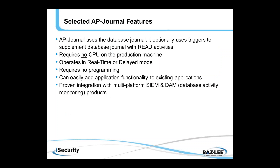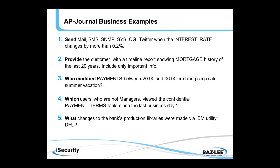Some of the AP Journal features are as follows. AP Journal uses the IBM database journal for its input, but since the database journal does not record read accesses, we use triggers to supplement it with read activities if this has been chosen as an option. AP Journal requires no CPU on the production machine. It operates in real-time or in delayed mode. It requires no programming at all — we have customers worldwide who have added application functionality to existing applications without programming. And we integrate with multi-platform SIEM and DAM products, sending updated information to these solutions for analysis and forensic analysis at a central multi-platform system.